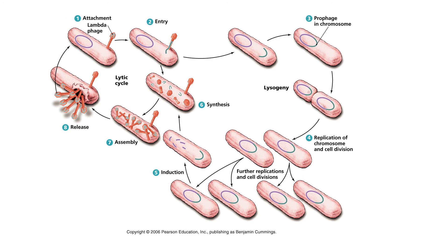Step six synthesis, step seven assembly, and step eight release are the same as what we covered in lytic viral replication. In step six, lambda DNA uses the E. coli host cell machinery to produce copies of its DNA and capsids. In step seven assembly, lambda viruses are assembled by putting the DNA inside the capsid. Then in step eight release, the E. coli host cell bursts, releasing the progeny viruses into the environment.